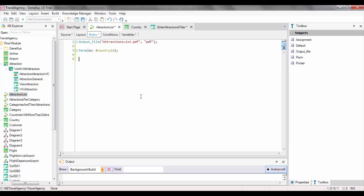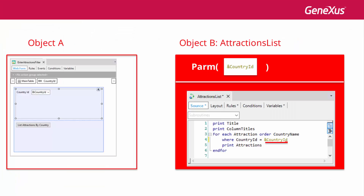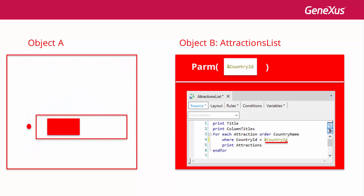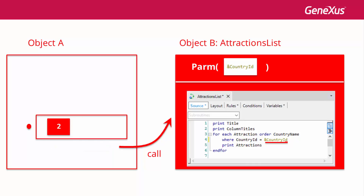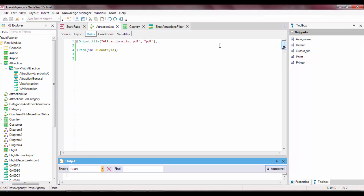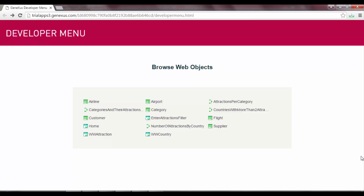That's why the Attractions List procedure will no longer be displayed in the developer menu. In the WebPanel case, we had this value in a variable. But if we had the data in an attribute, we would include the corresponding attribute between the brackets. We may also send a literal value, or if we had to send two or more values, we would send several attributes, and/or explicit values, and/or variables separated by commas. These parameters are also declared in the PARM rule in an ordered manner, separated by commas. Obviously, an object that doesn't receive parameters must not declare the PARM rule. We try what we have done by pressing F5, and see that the Attractions List procedure is no longer displayed — now we can only call it through the WebPanel.